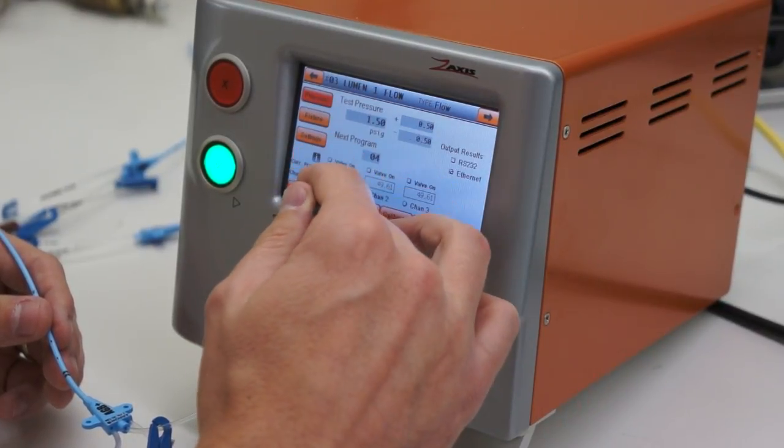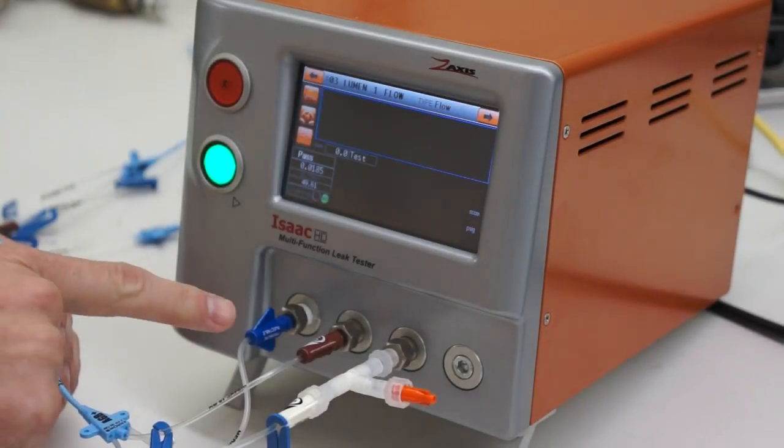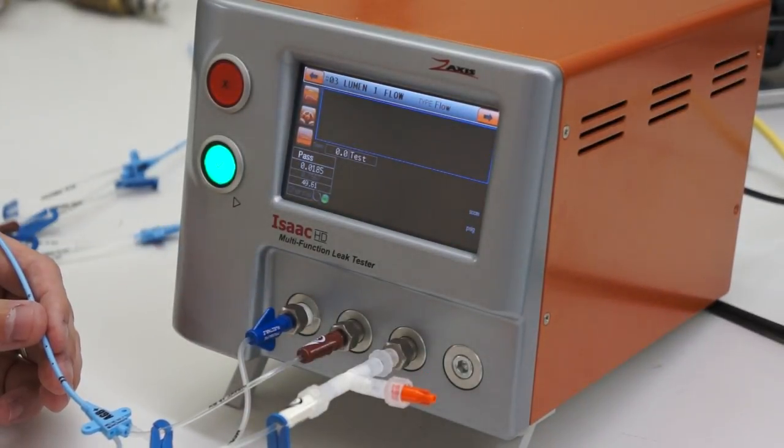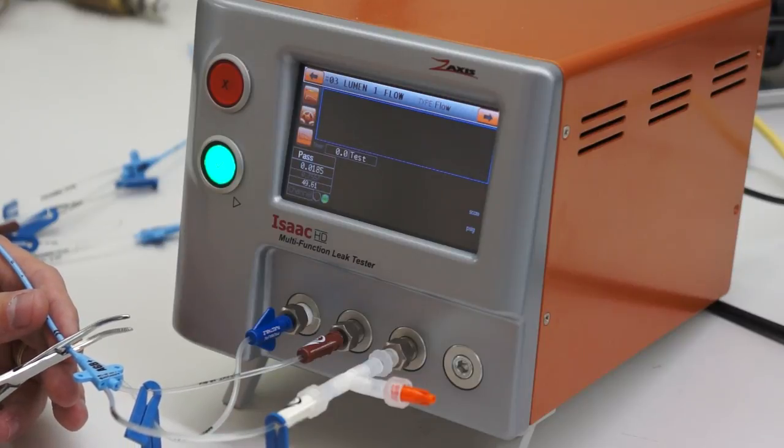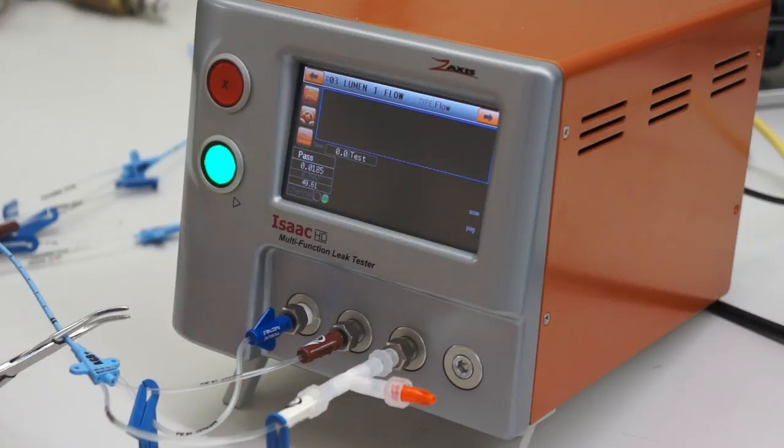We start on the flow tests. We will do three flow tests, one for each lumen. Then I will occlude the part with a set of forceps, and it will do the leak tests.